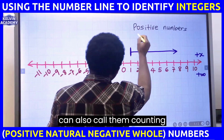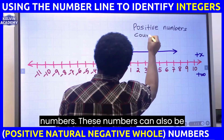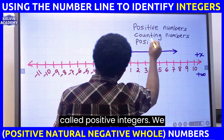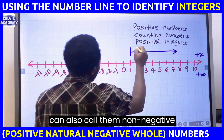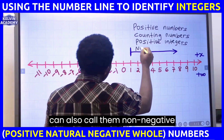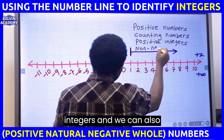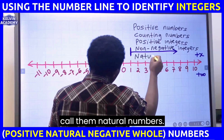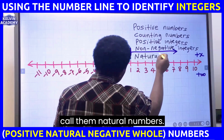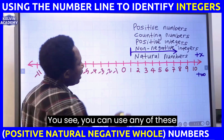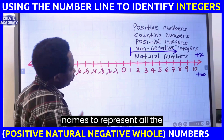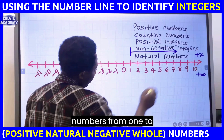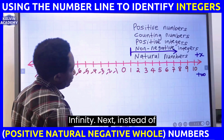We can also call them counting numbers. These numbers can also be called positive integers. We can also call them non-negative integers, and we can also call them natural numbers. You can use any of these names to represent all the numbers from 1 to infinity.